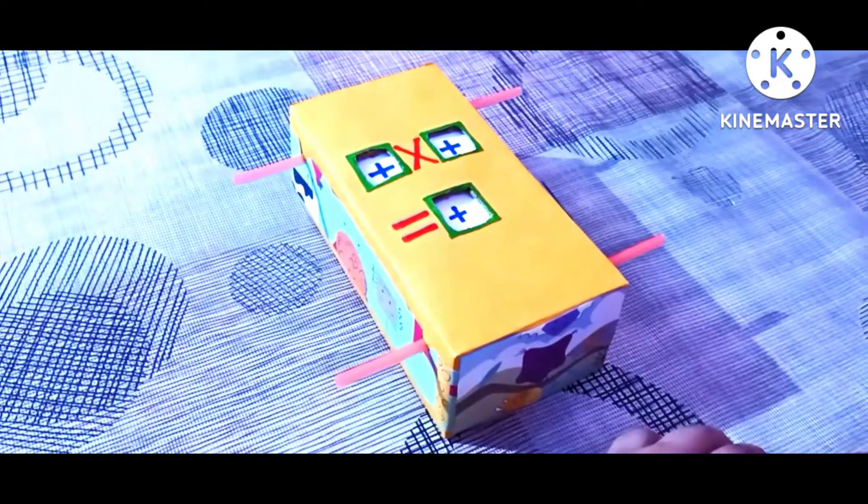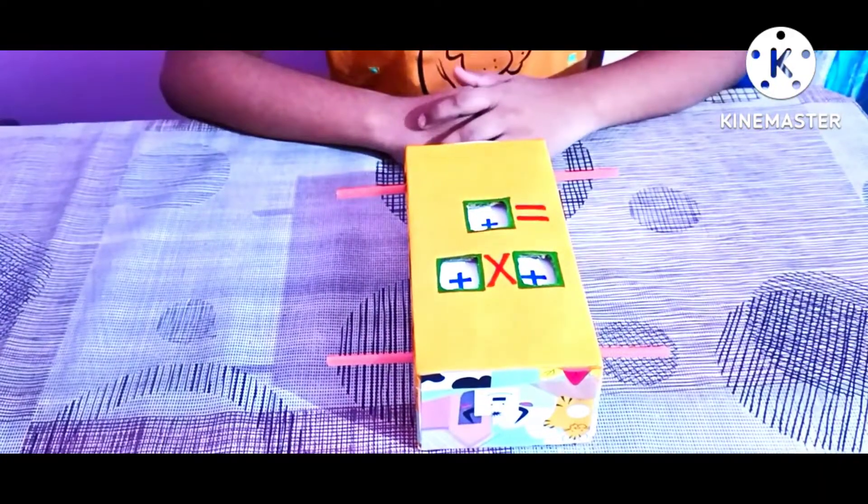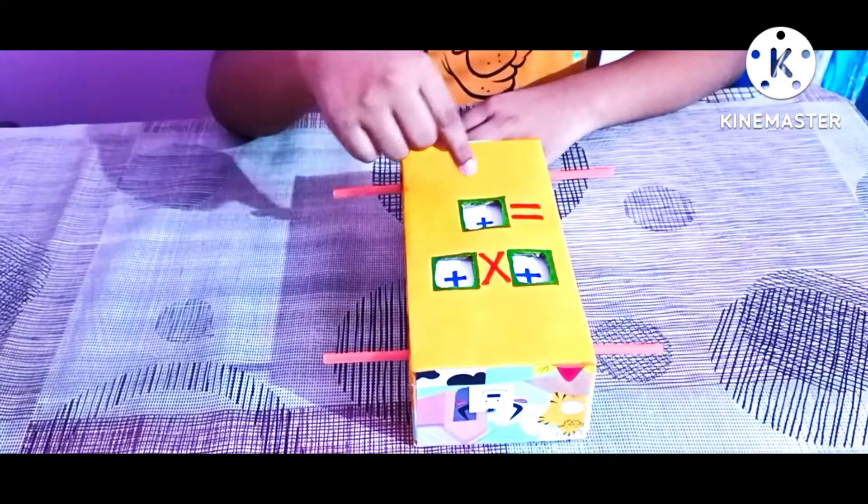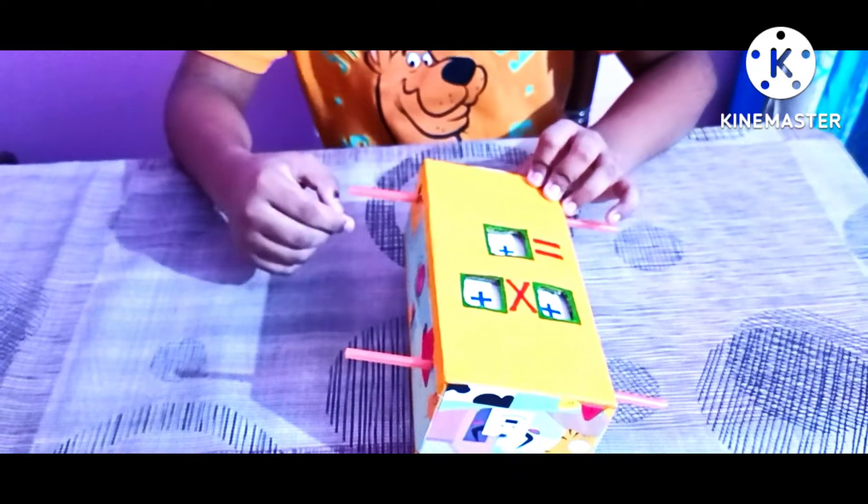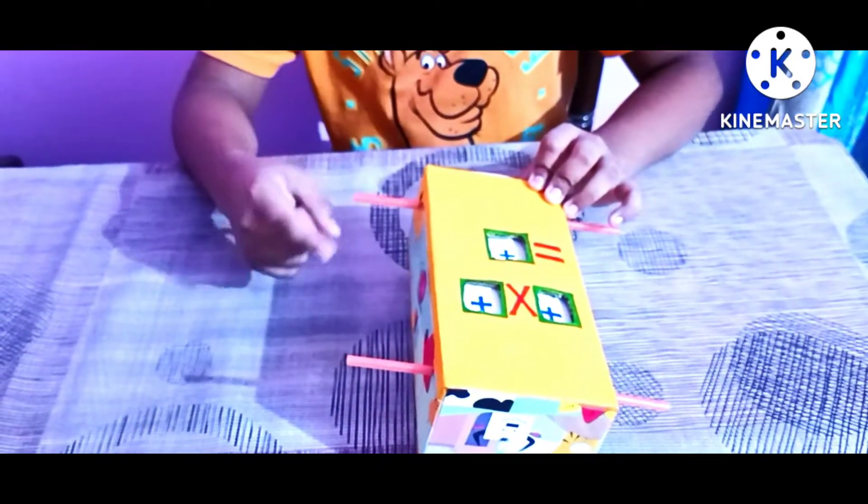To make our model, we will take a cardboard box. After that, we will draw three squares on the front like these, and two circular holes from a pencil on each side.